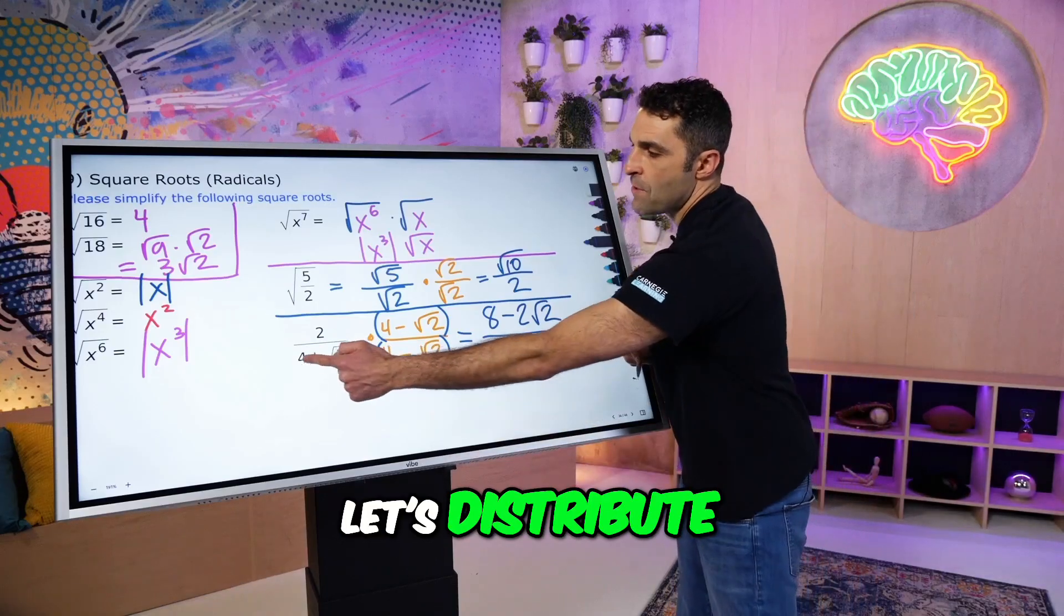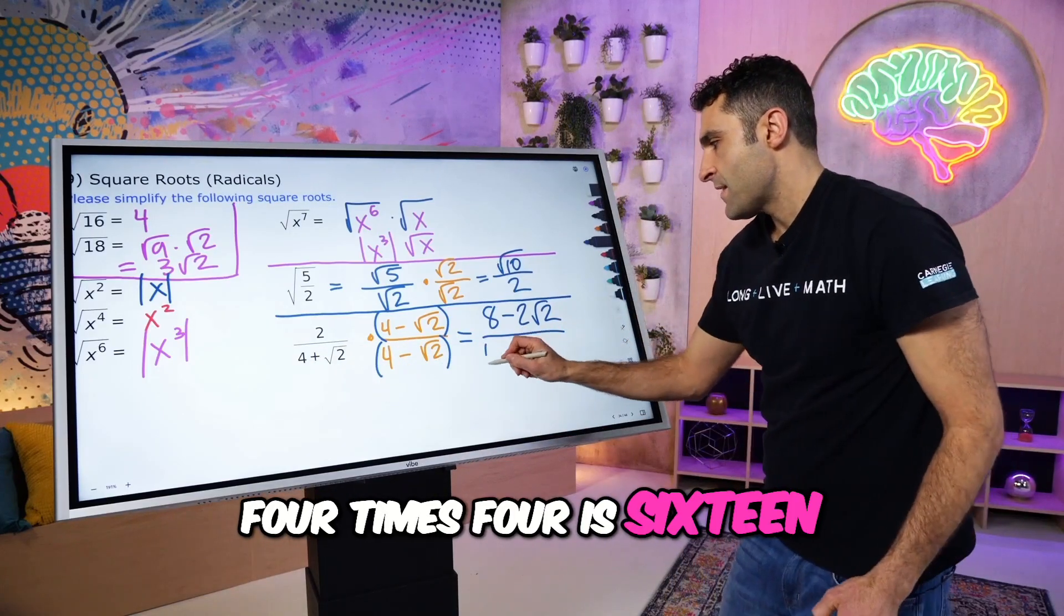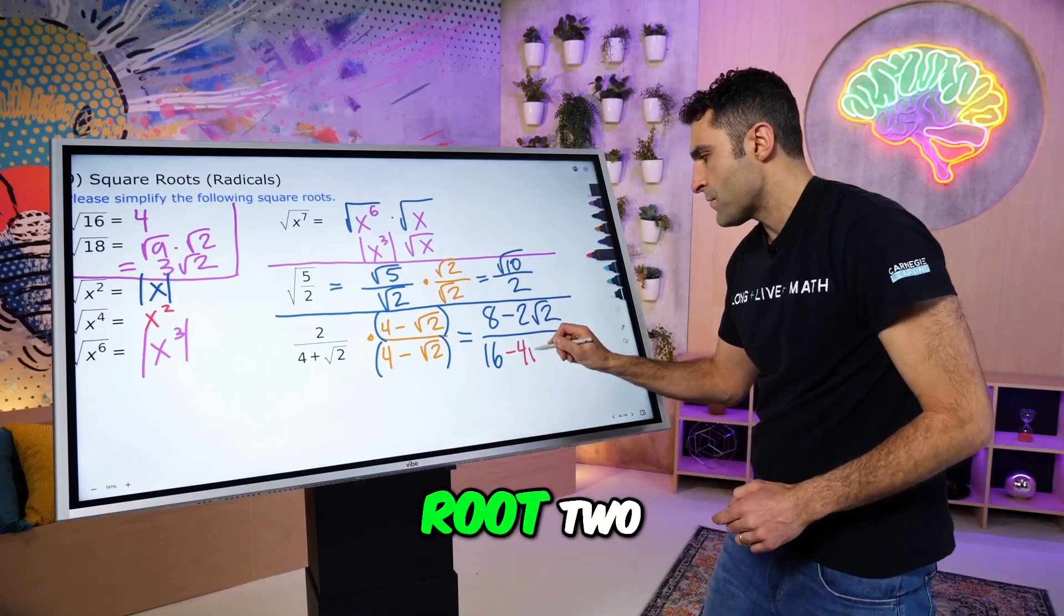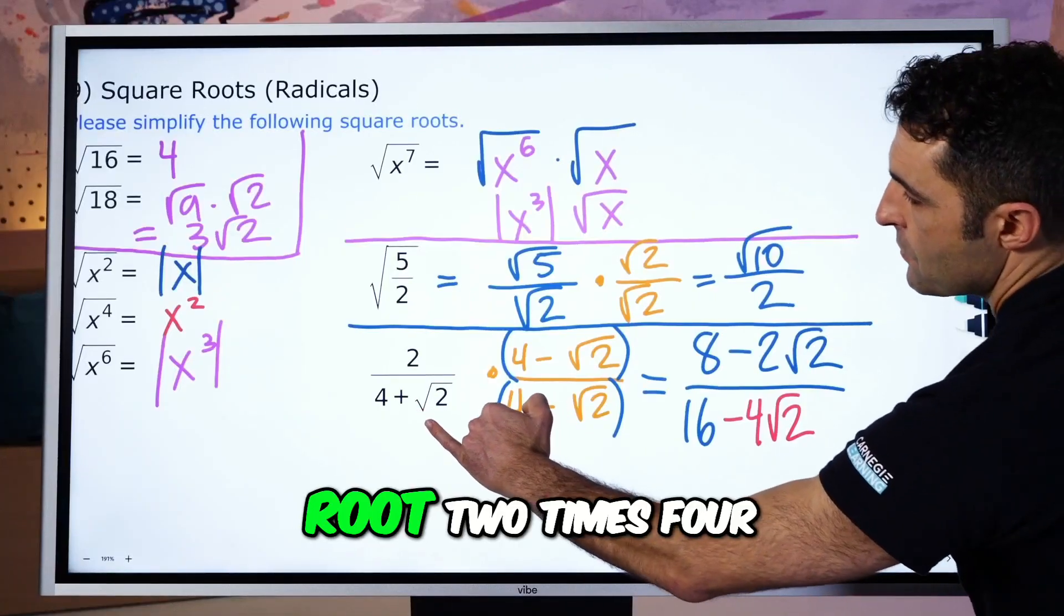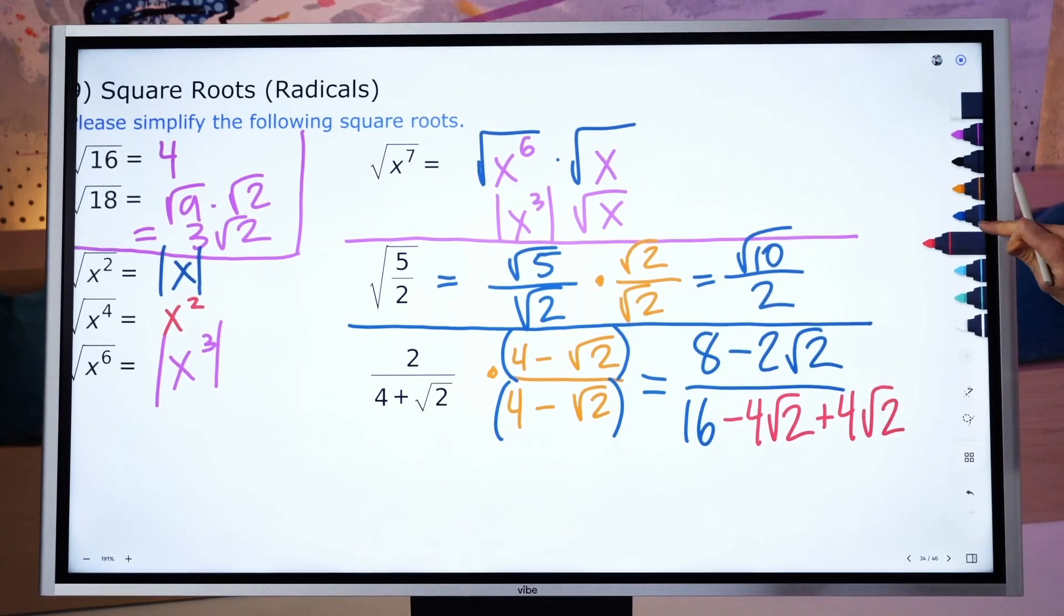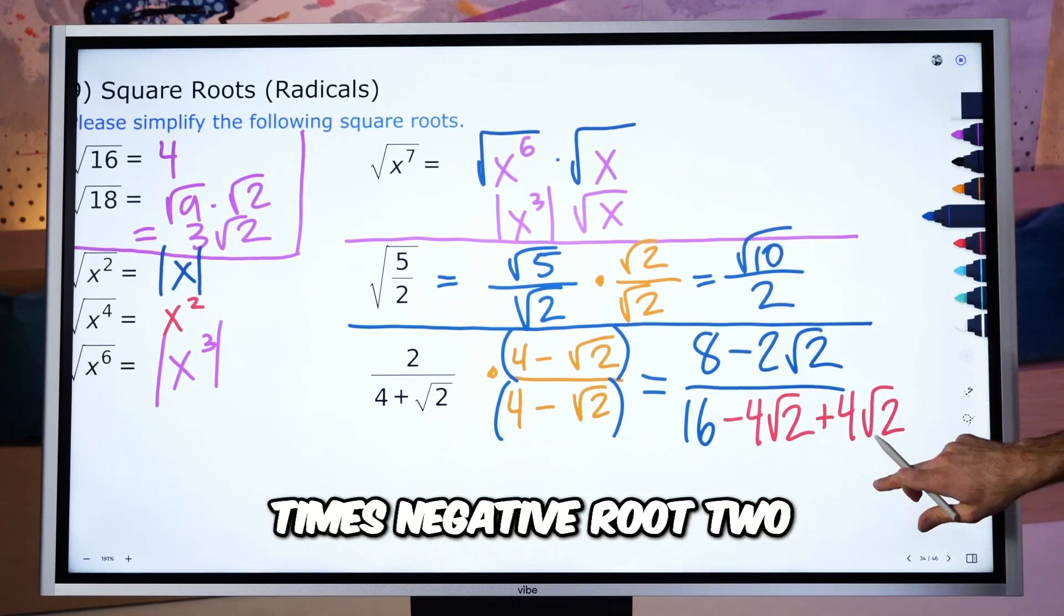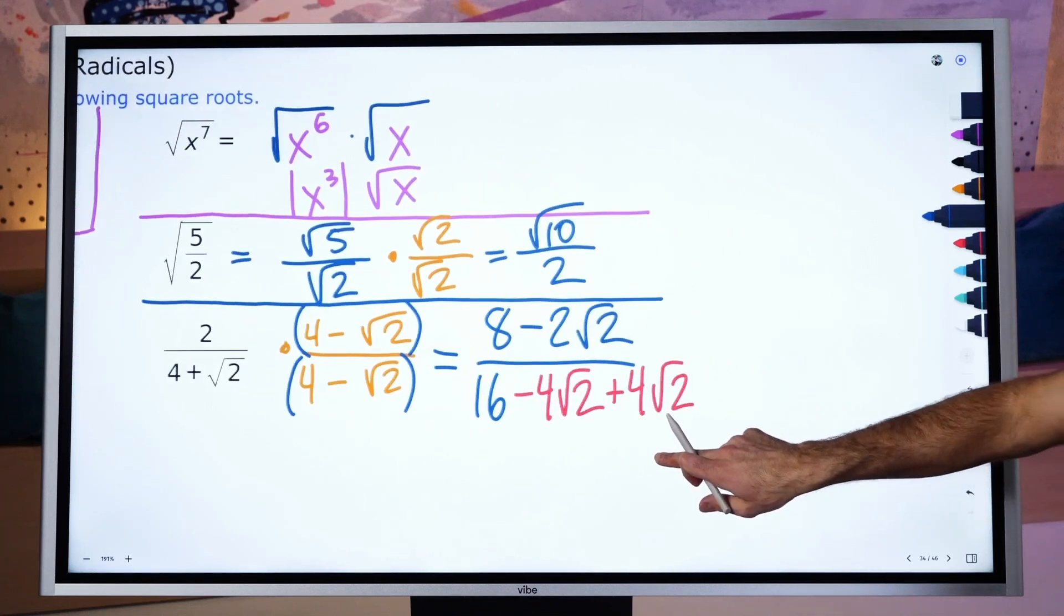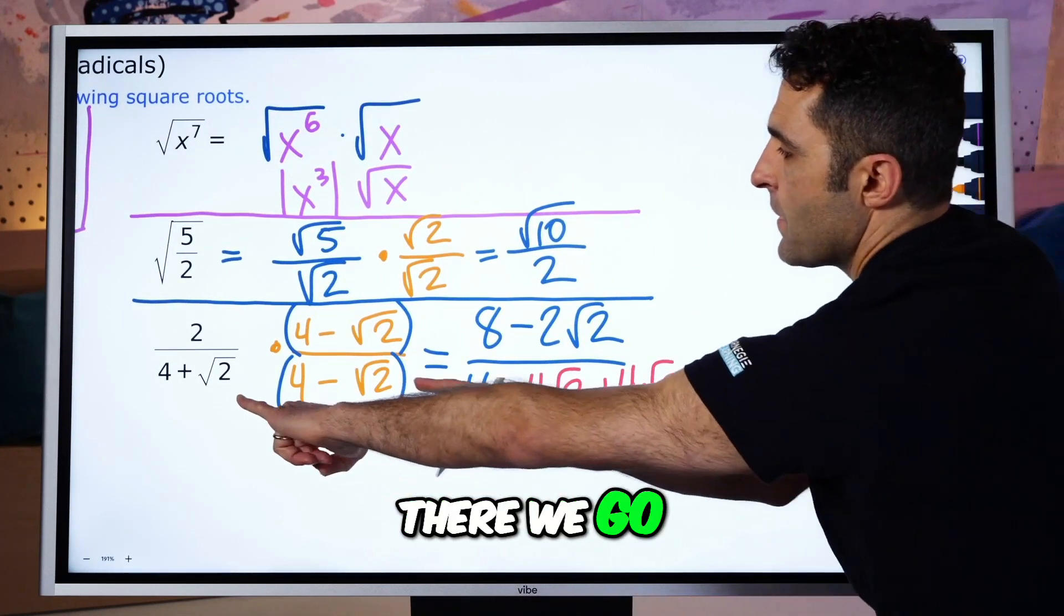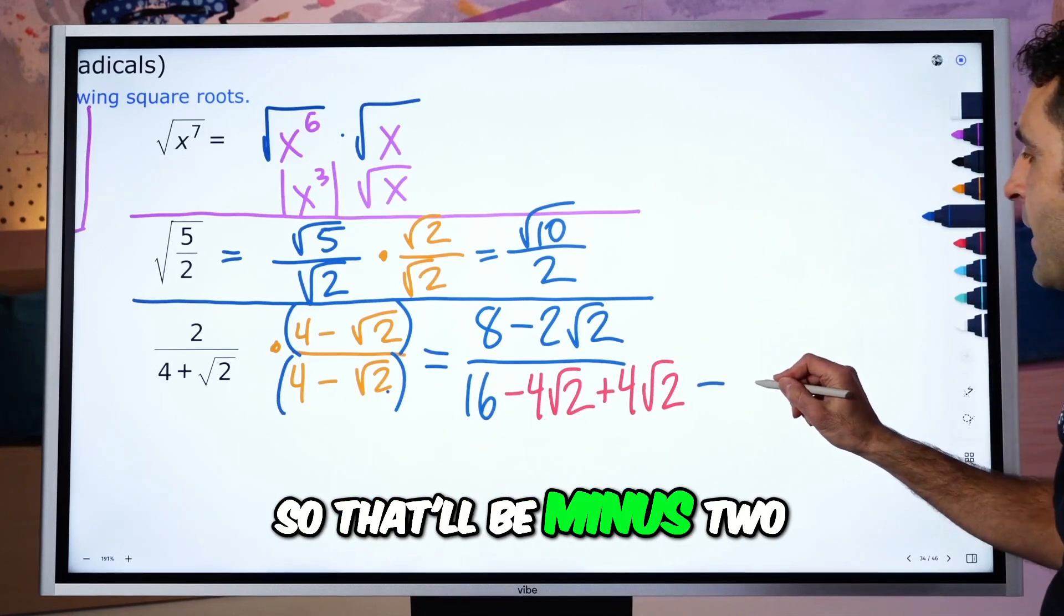Divided by, let's distribute. 4 times 4 is 16. 4 times negative root 2 minus 4 root 2. Root 2 times 4, positive plus 4 root 2. And then root 2 times negative root 2, recall root times itself is the number inside. There we go. There it is. So that would be minus 2.